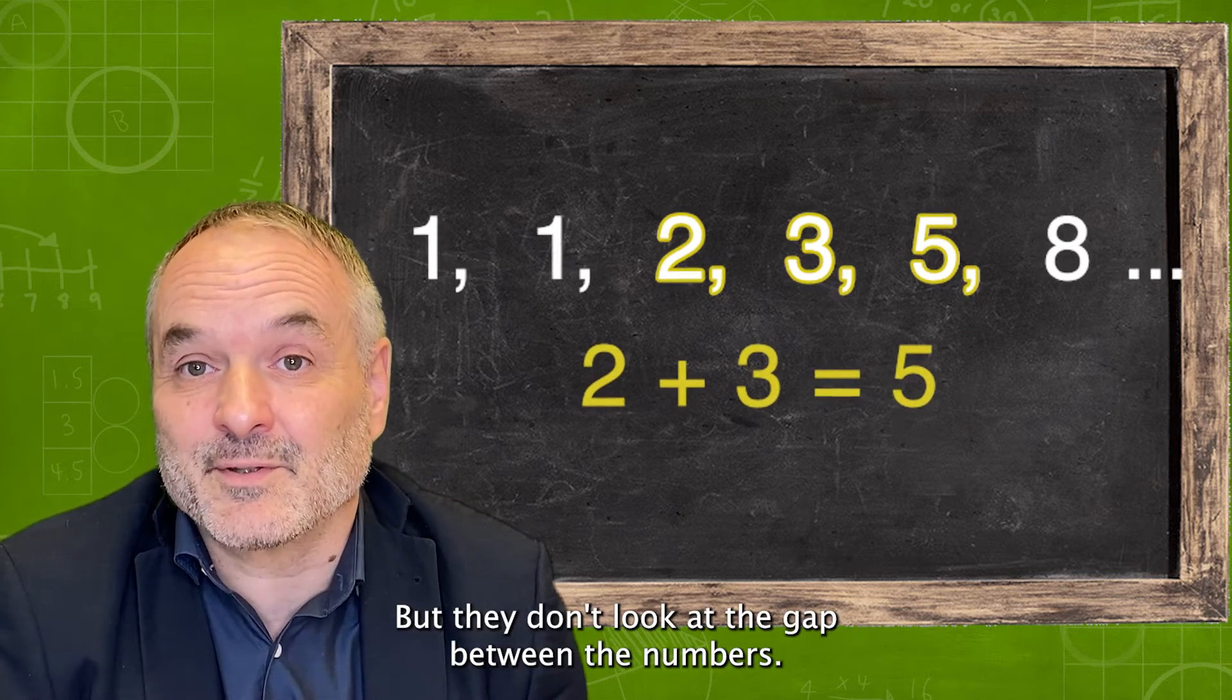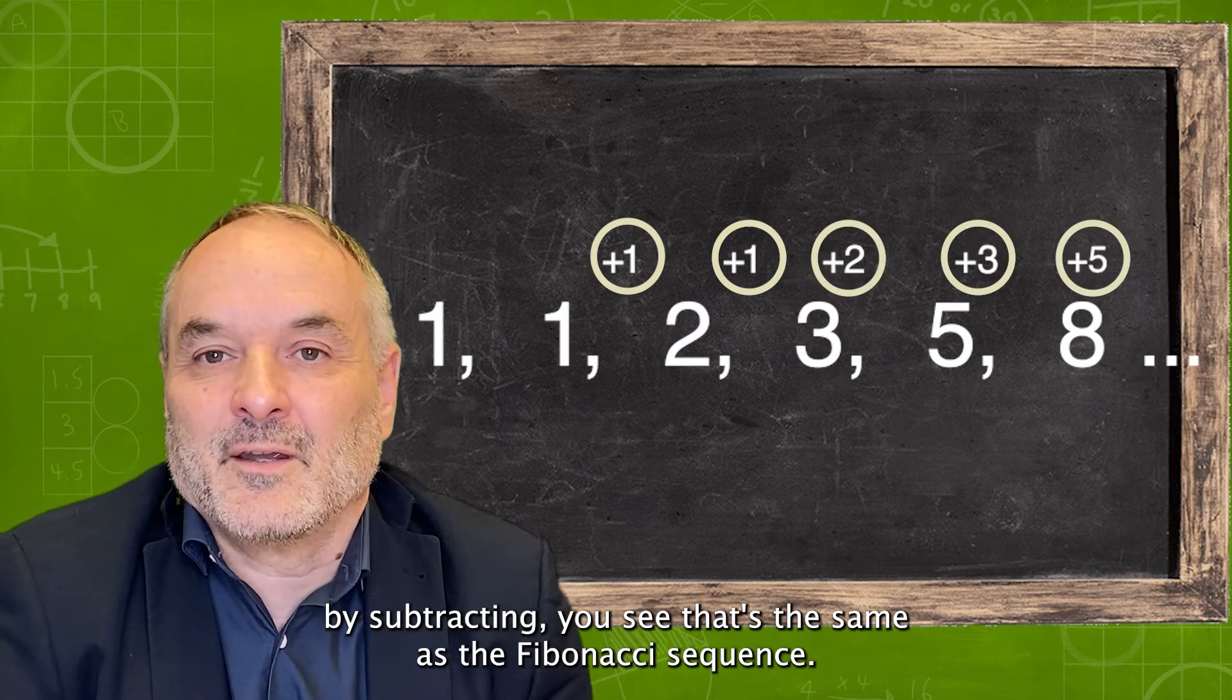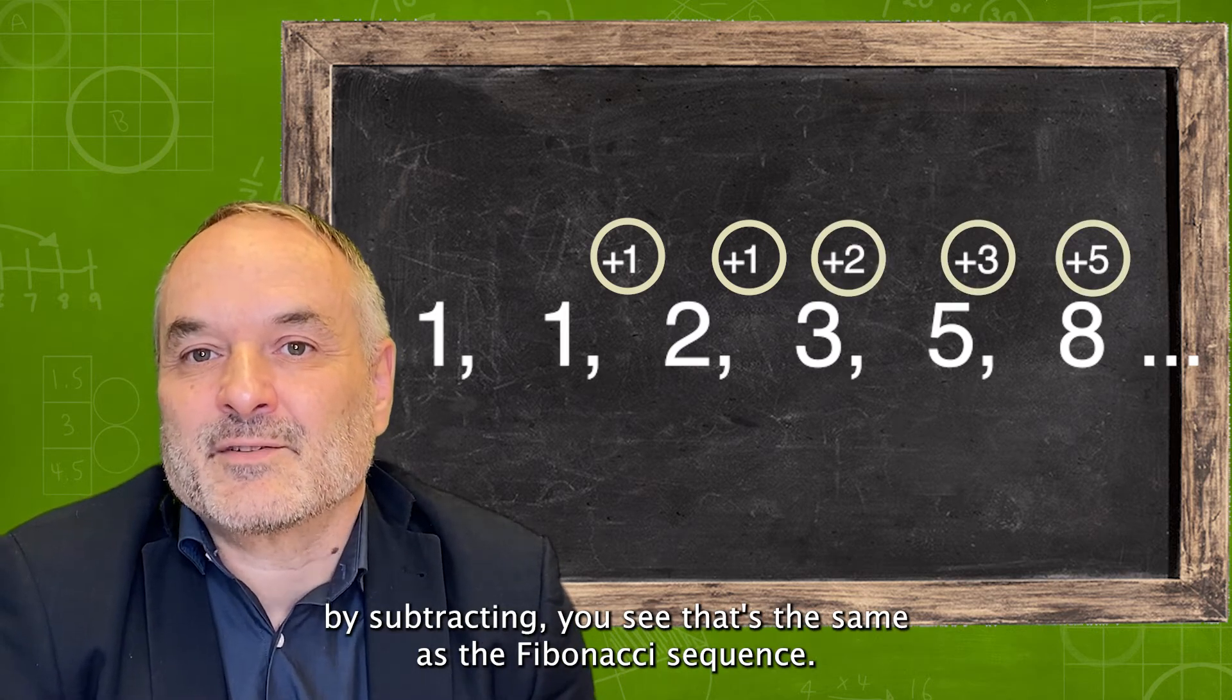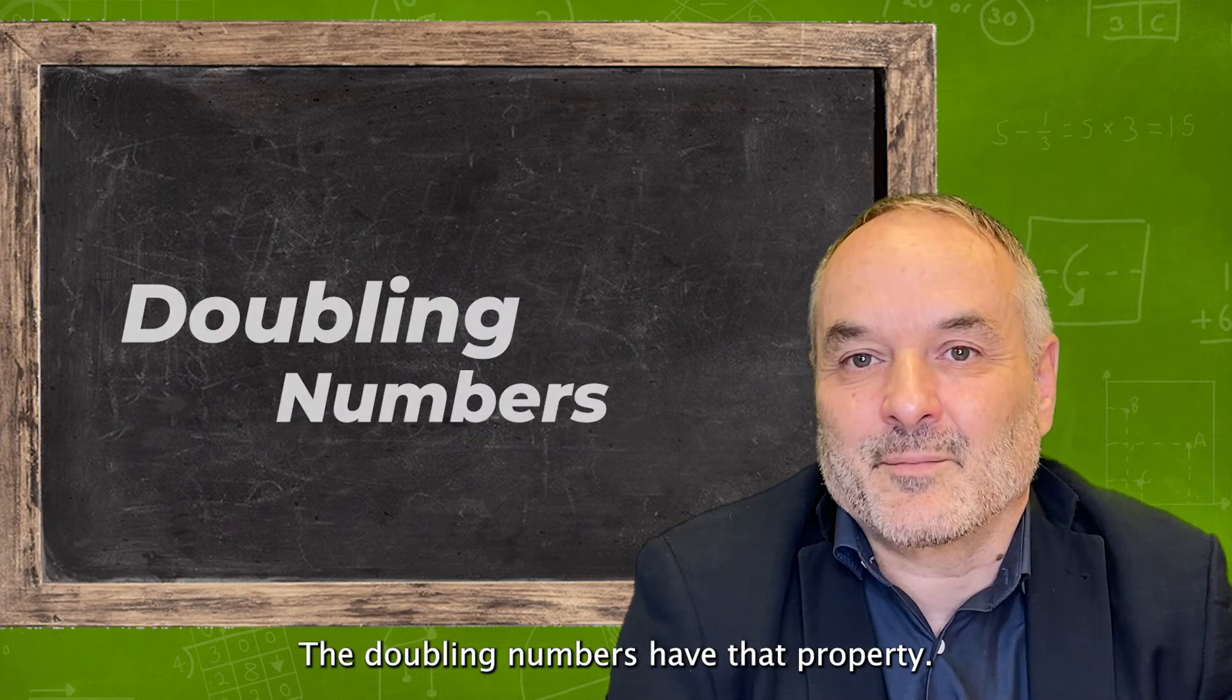But they don't look at the gap between the numbers. If you look at the difference between the numbers, which kids can find by subtracting, you see that it's the same as the Fibonacci sequence. You could ask them to find another sequence that has the same property. The doubling numbers have that property.